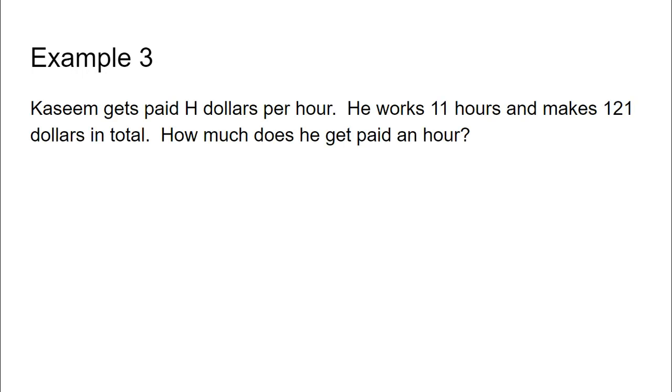For the third example, we have Kasim gets paid H dollars per hour. He works 11 hours and makes 121 dollars in total. How much does he get paid an hour? Here, this big keyword here is per. It's H dollars per hour. So the operation here is multiplication. We're going to identify the opposite operation, which is division.